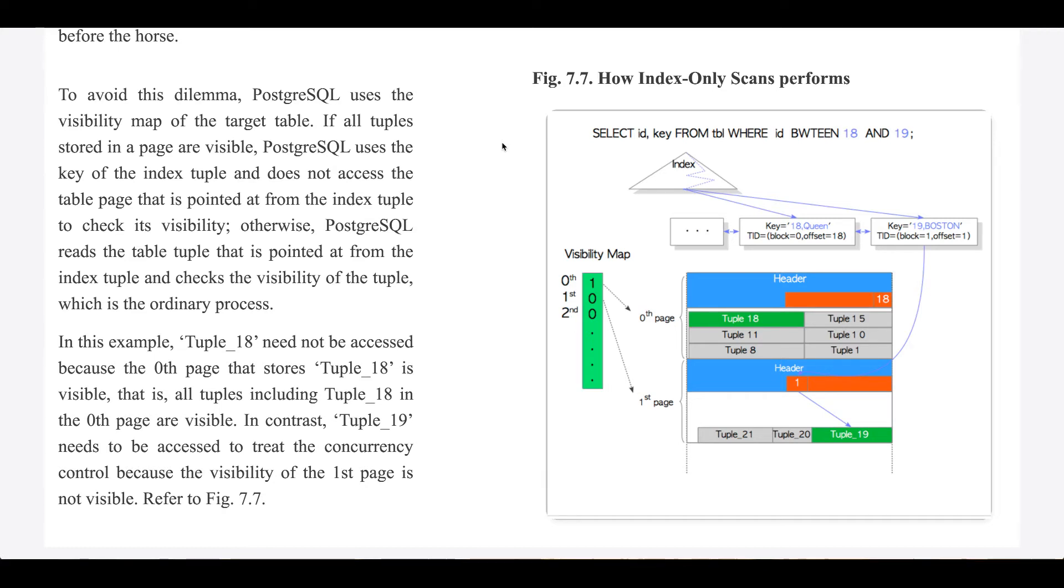In this example, tuple 18 need not be accessed because the page at index 0 that stores tuple 18 is visible. That is, all tuples, including tuple 18, in the page at index 0 are visible.